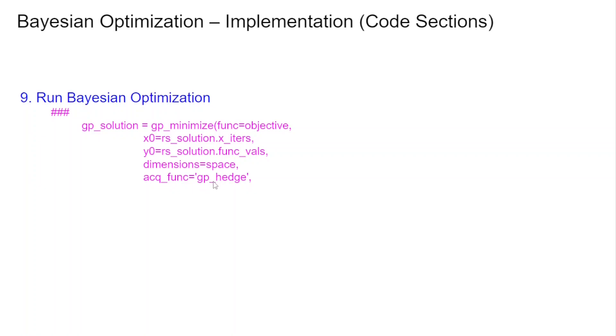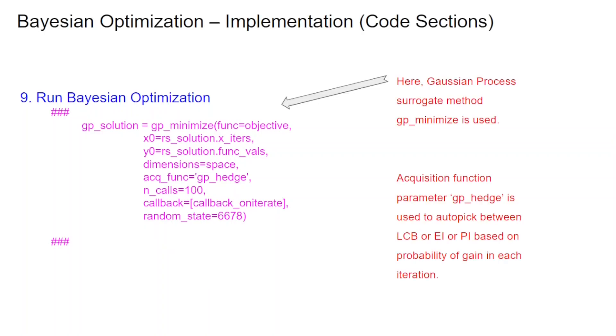The number of calls I wanted to do for the minimization overall exercise is 100 steps. And every time it calls each step I wanted to call this callback where we have already seen we know how to persist information or use that information for printing purposes. So that ties the whole thing together. So what have we done here? We have taken the Gaussian process target method gp_minimize and we are using the gp_hedge method which will auto pick between lower confidence bound, upper confidence bound, expected improvement and probability improvement based on the probability of gain at each iteration. So thus there is a nine step process, nine step pieces rather I would say for us to put this together.